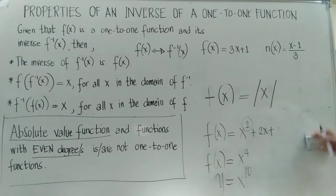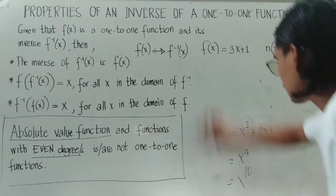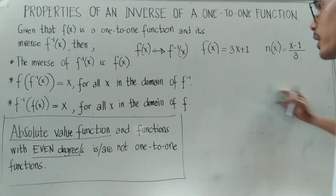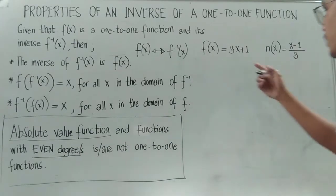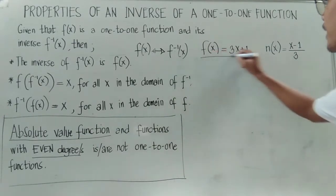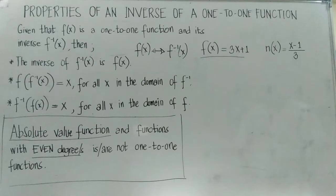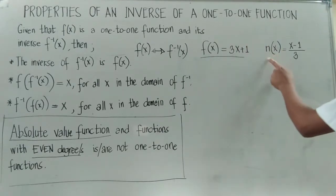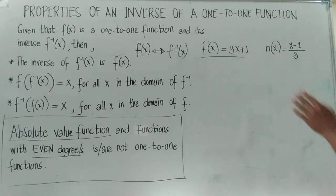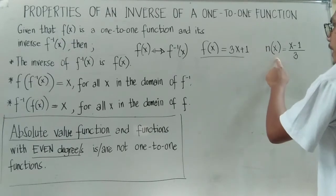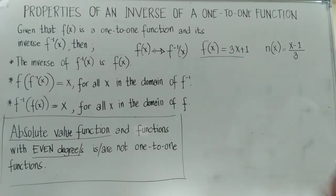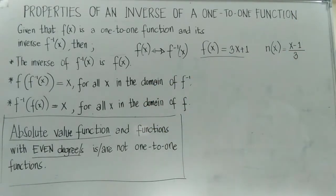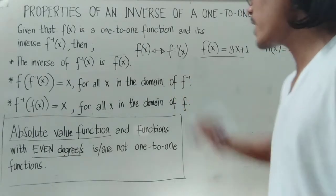So we are clear on what reminds us when solving for one-to-one functions and inverses. Going back to our properties: given functions f of x and n of x, if we ask whether f of x is an inverse of n of x, or equivalently whether n of x is an inverse of f of x, we can answer using our two properties.